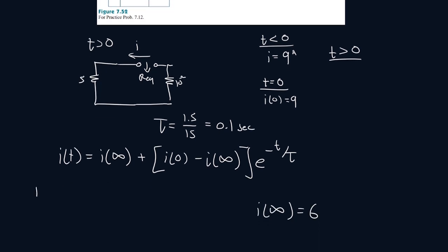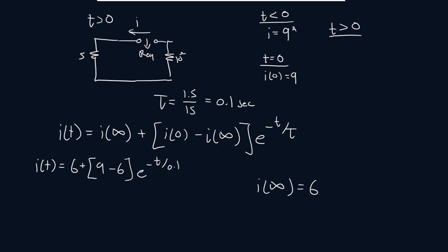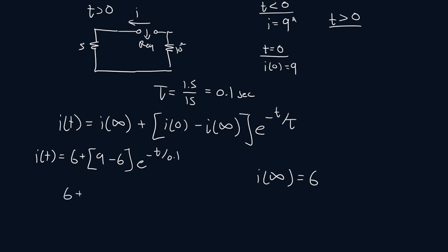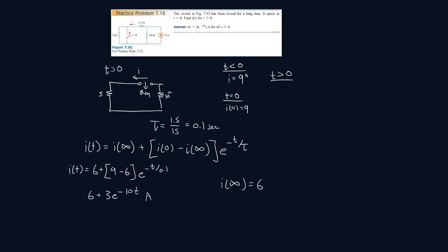Now let's find the formula: i(t) = i(∞) + [i(0) − i(∞)] · e^(−t/τ) = 6 + (9 − 6) · e^(−t/0.1) = 6 + 3e^(−10t) amps. That's the final answer for when t is greater than 0.